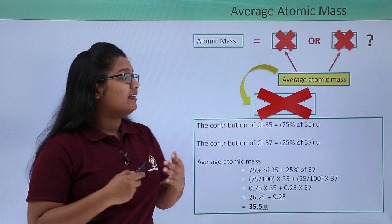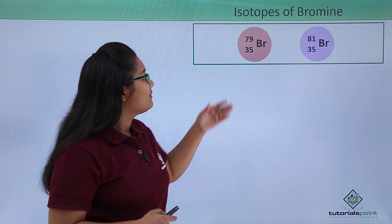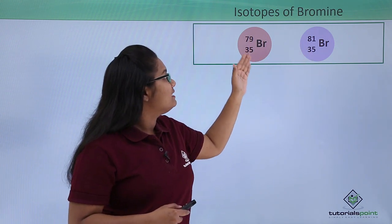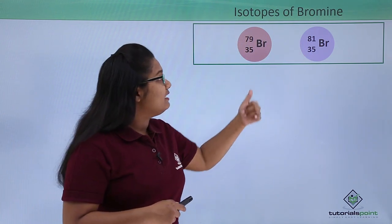Now let us take another example of bromine. Bromine exists in two isotopic forms: bromine-79 and bromine-81.